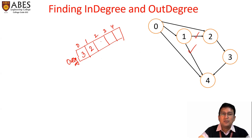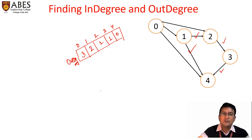For vertex two, the outdegree is one because there is only one edge which emerges. For vertex three, it is one — only one edge emerges. For vertex four, it is zero because there are no outgoing edges from vertex number four.